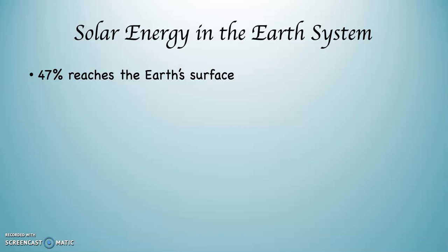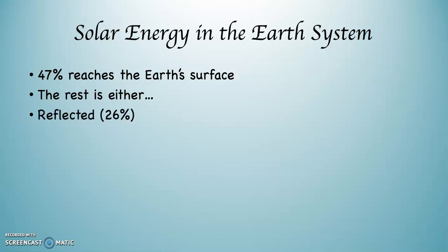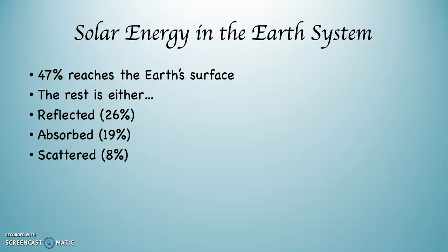That's what it's telling you. And the rest is either reflected, absorbed, or — and this is a scientific term — scattered. What that means is that it sort of bounces around, and in most cases it bounces back out into space. So 47% reaches the surface of the planet, and that is the right amount — the perfect amount. It makes things work the way they need to work on this planet for you and me to be alive.